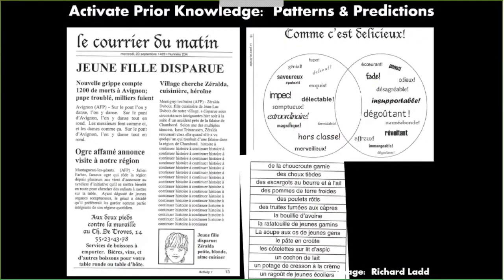I want to help them activate their prior knowledge. This happens to be a fake text, but it will give you an idea of how you might go about this. I might ask students to use their knowledge of the genre of newspapers or their knowledge of some of the key words to figure out what this seems to be about. Between cognates and just the general structure of a newspaper that most students are familiar with, they can usually figure out that there's something about a little girl, there's a story about an ogre, a heroine, a little girl's disappeared, and so on. So then you can start to ask students to make predictions — what do you think this story is going to be about, or how do you think these events might be related?